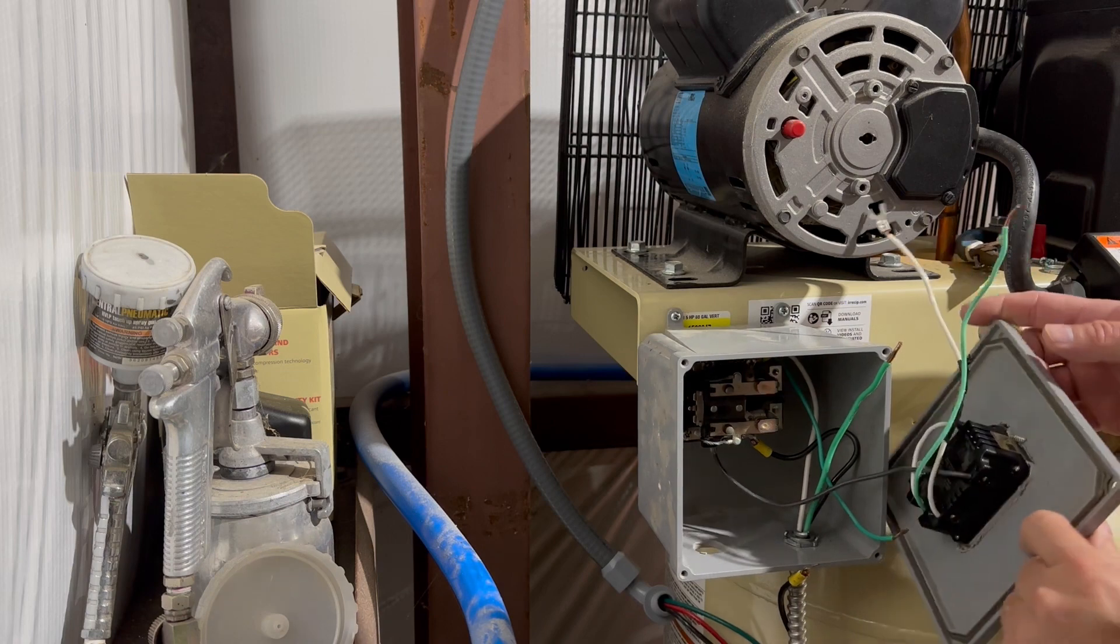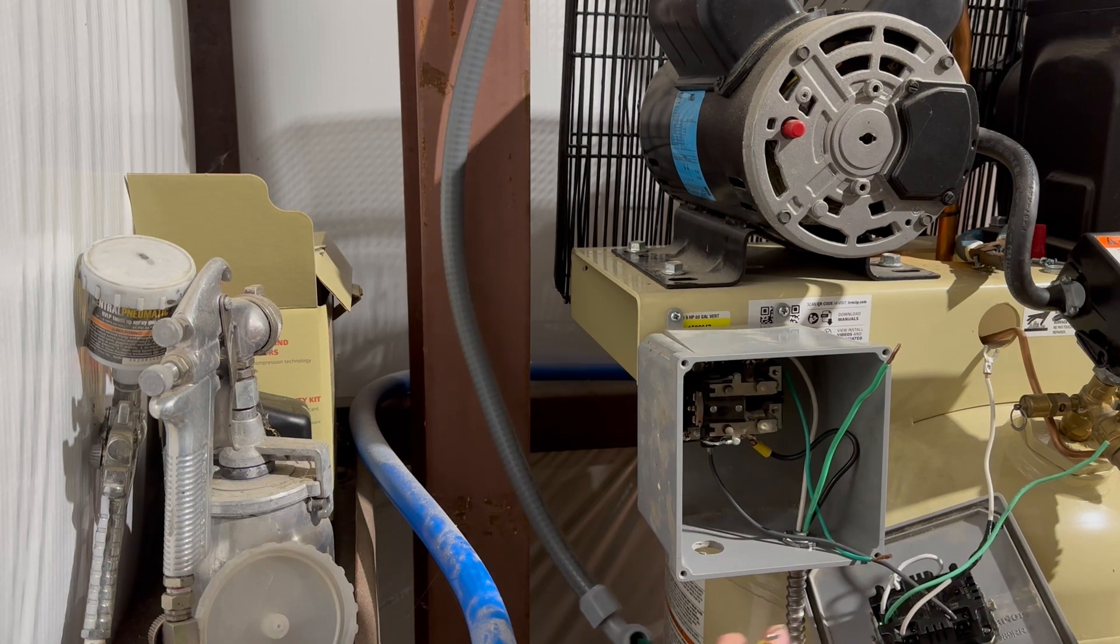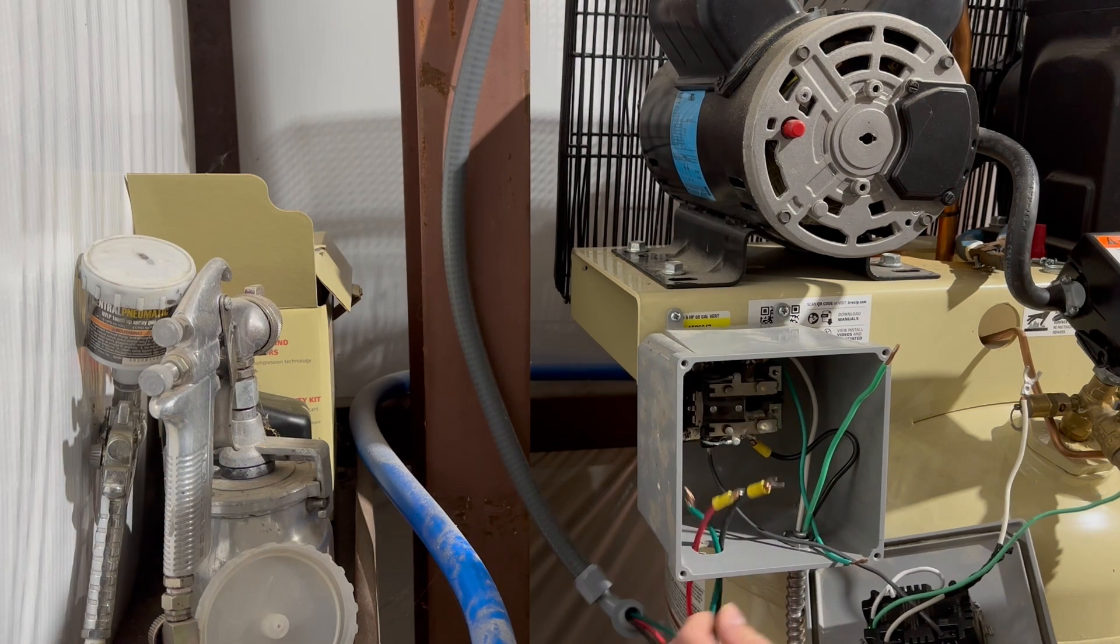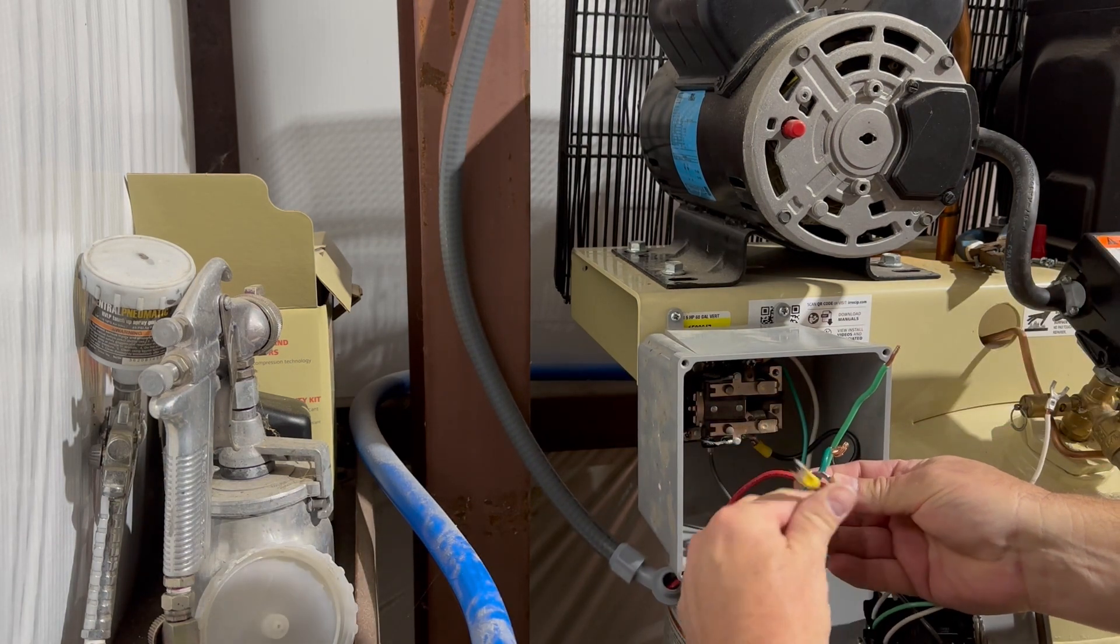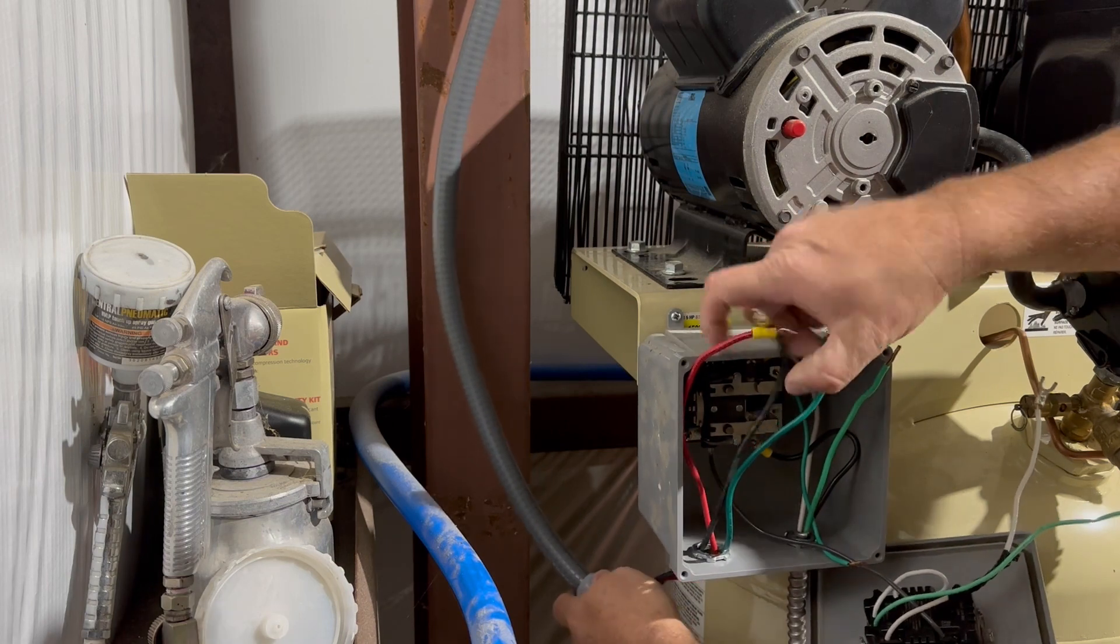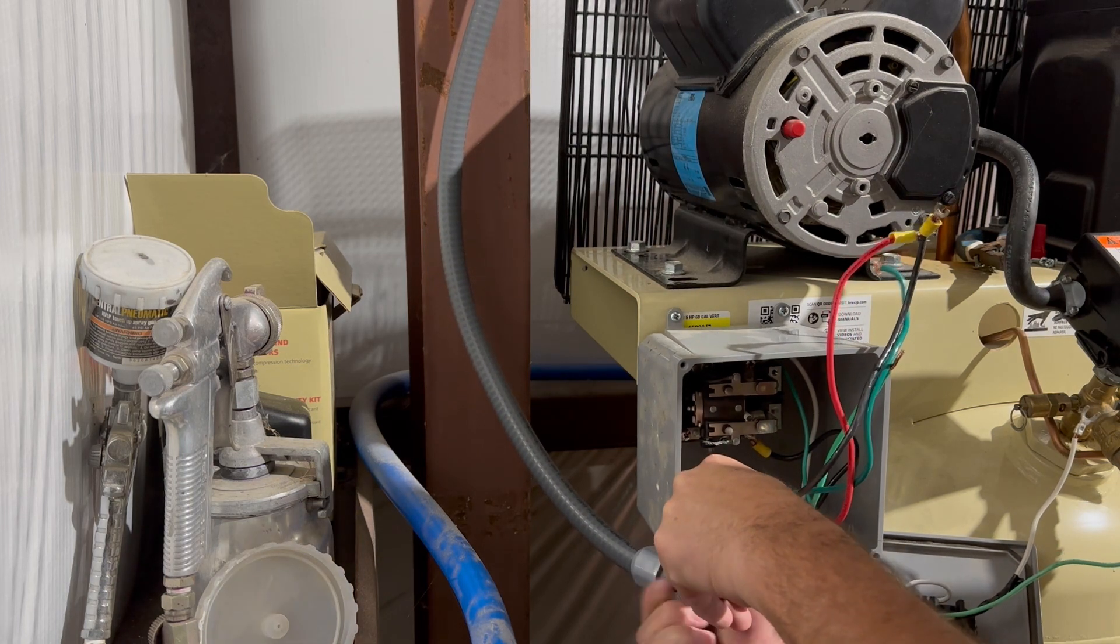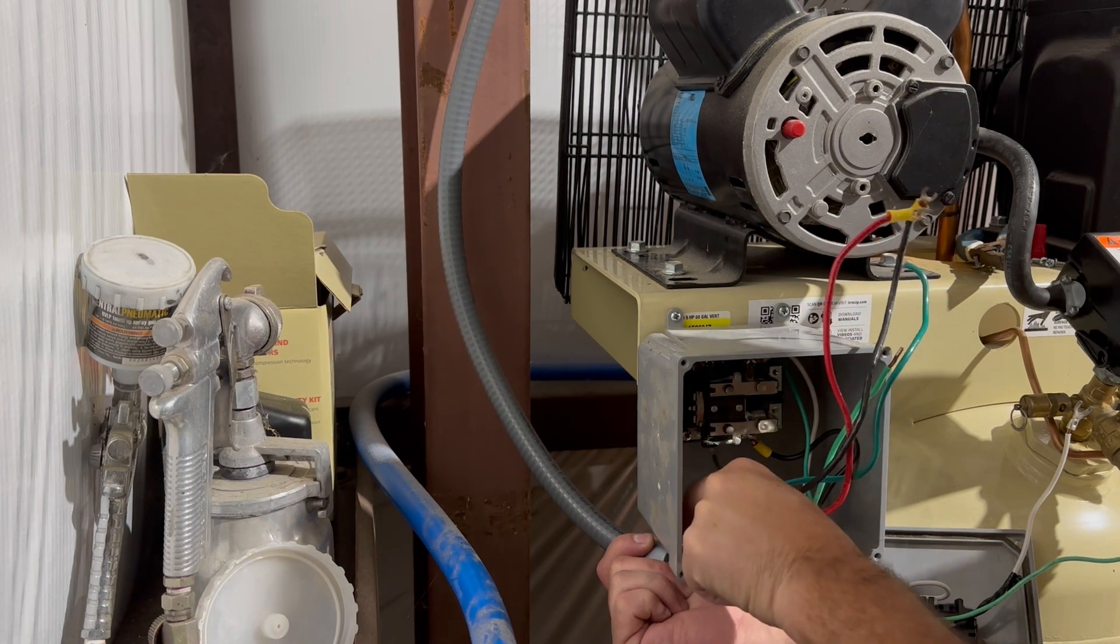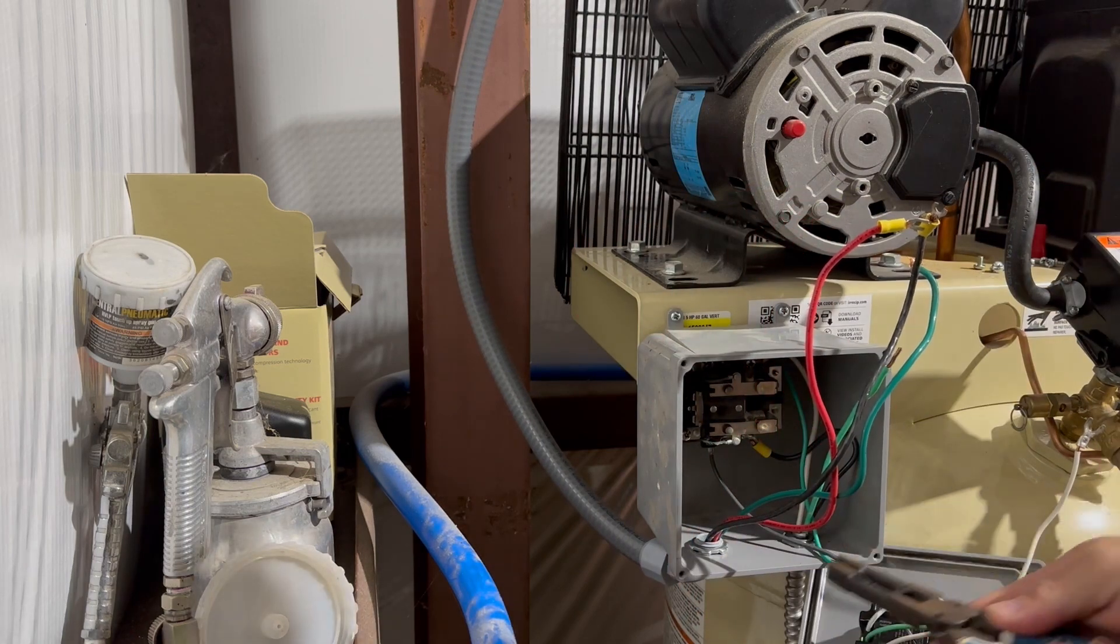So now that that's mounted, we're going to take the wire that comes from the disconnect switch and go ahead and run that through this hole, find our other side to the connector there, and get that pushed through. Tighten that down.